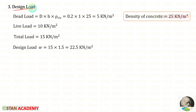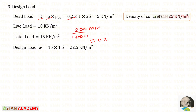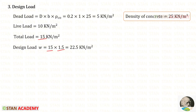Now let us find the design load. The dead load is calculated as D × breadth × density of concrete = 0.2 × 1 × 25 = 5 kN/m². The live load is 10 kN/m². Total load = 5 + 10 = 15 kN/m². The design load (factored) = 15 × 1.5 = 22.5 kN/m².